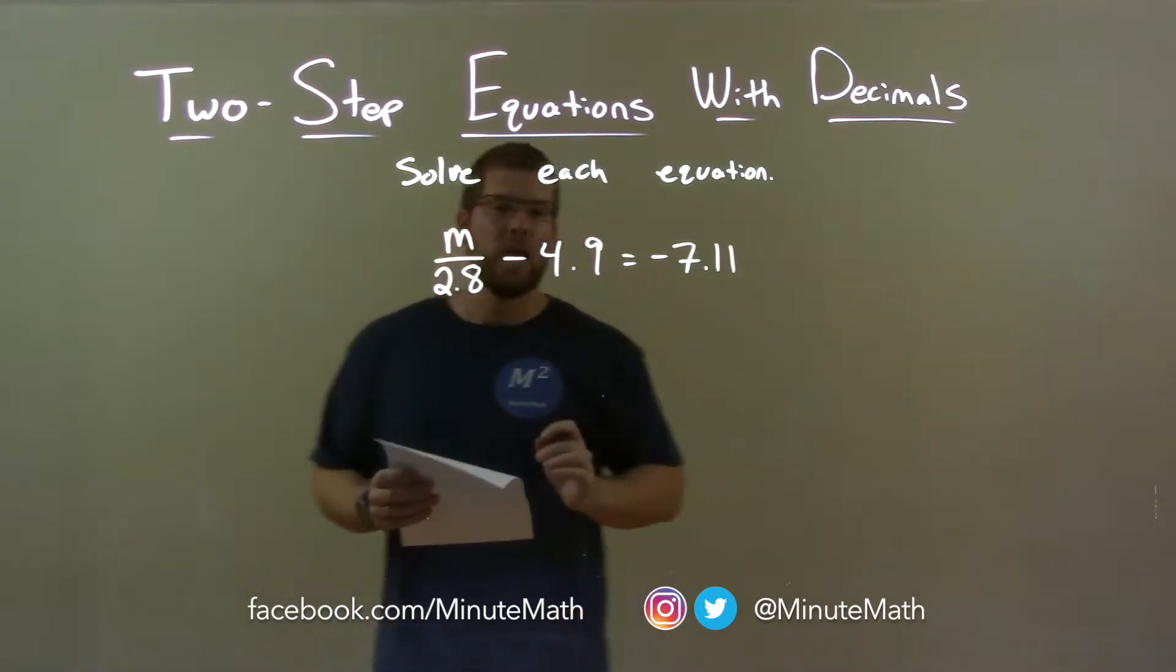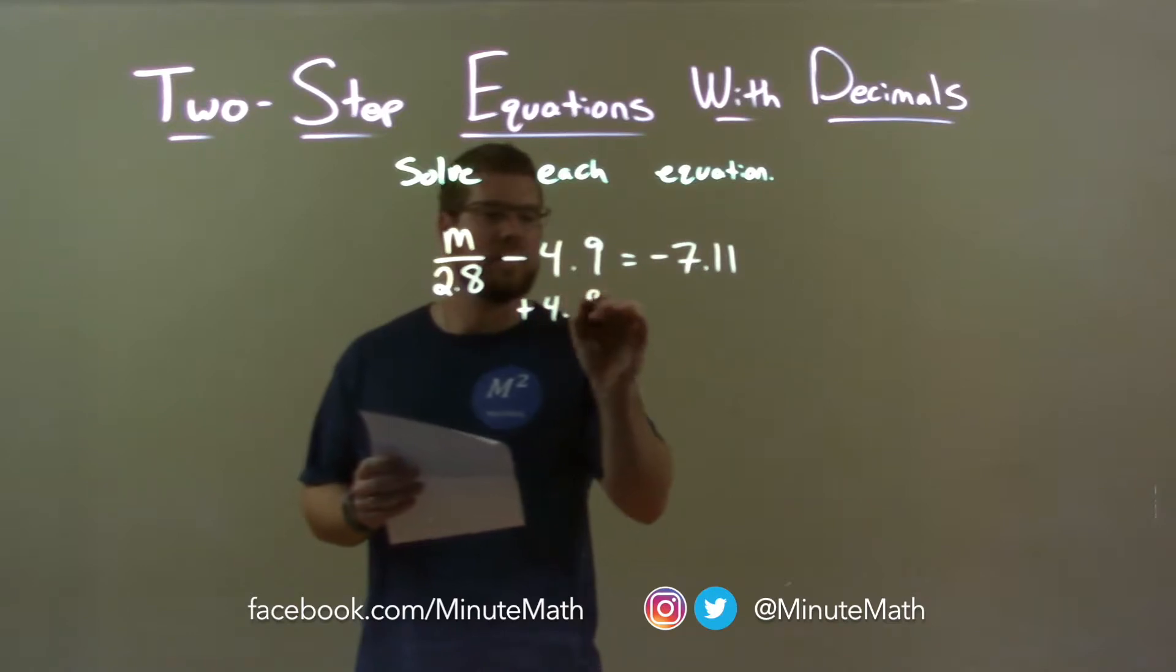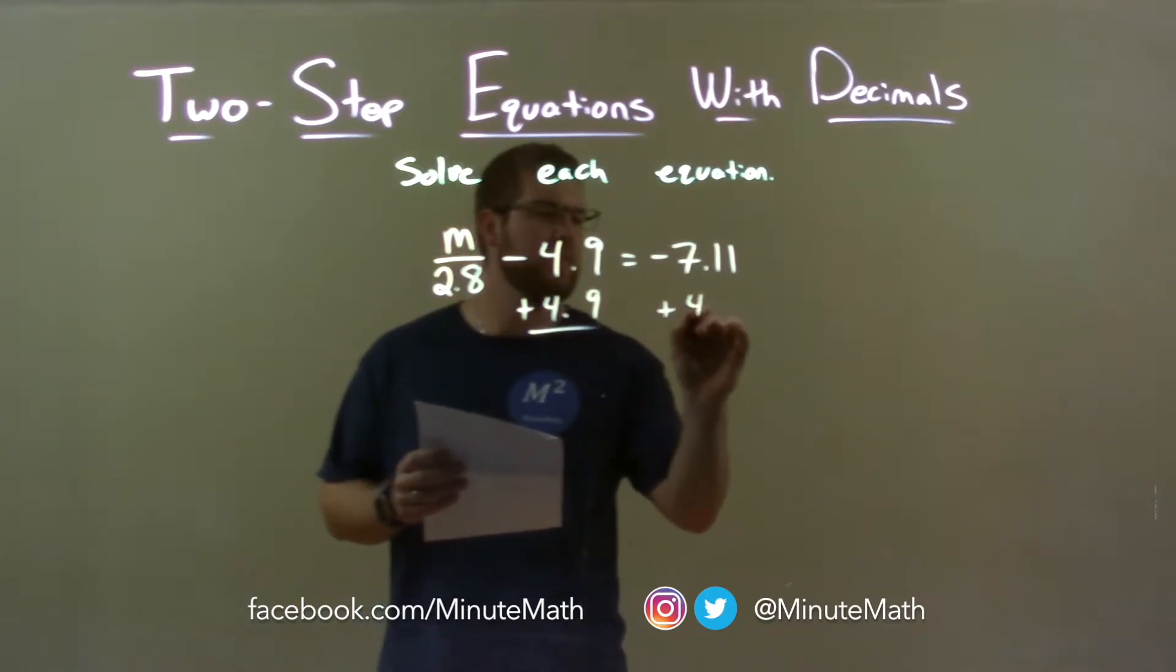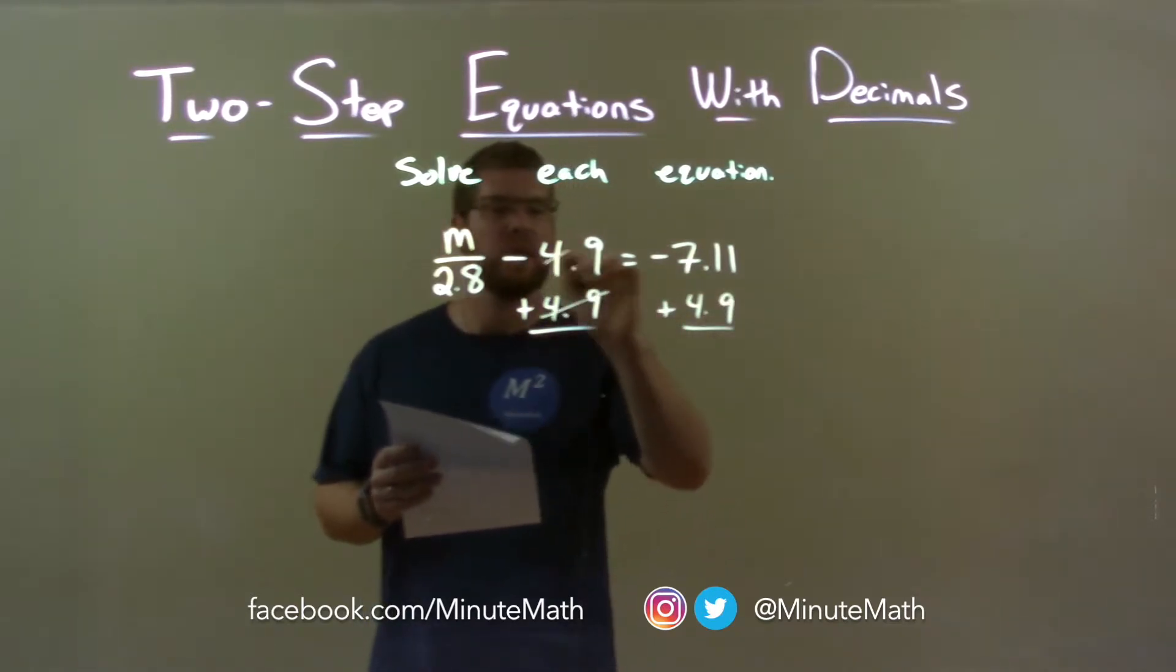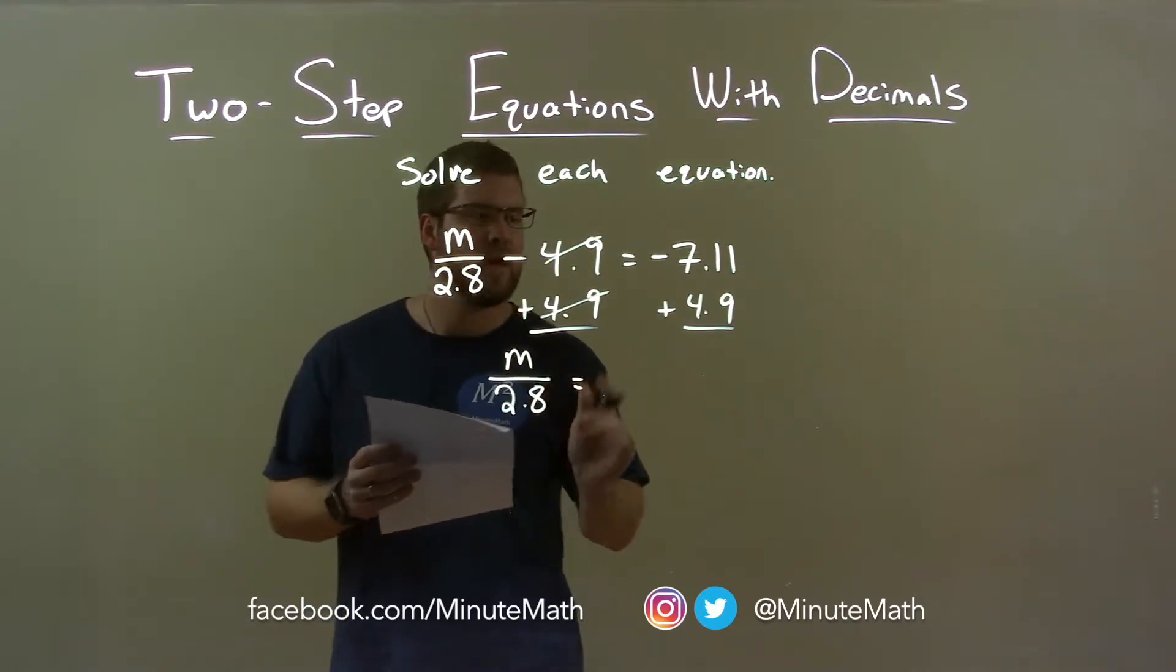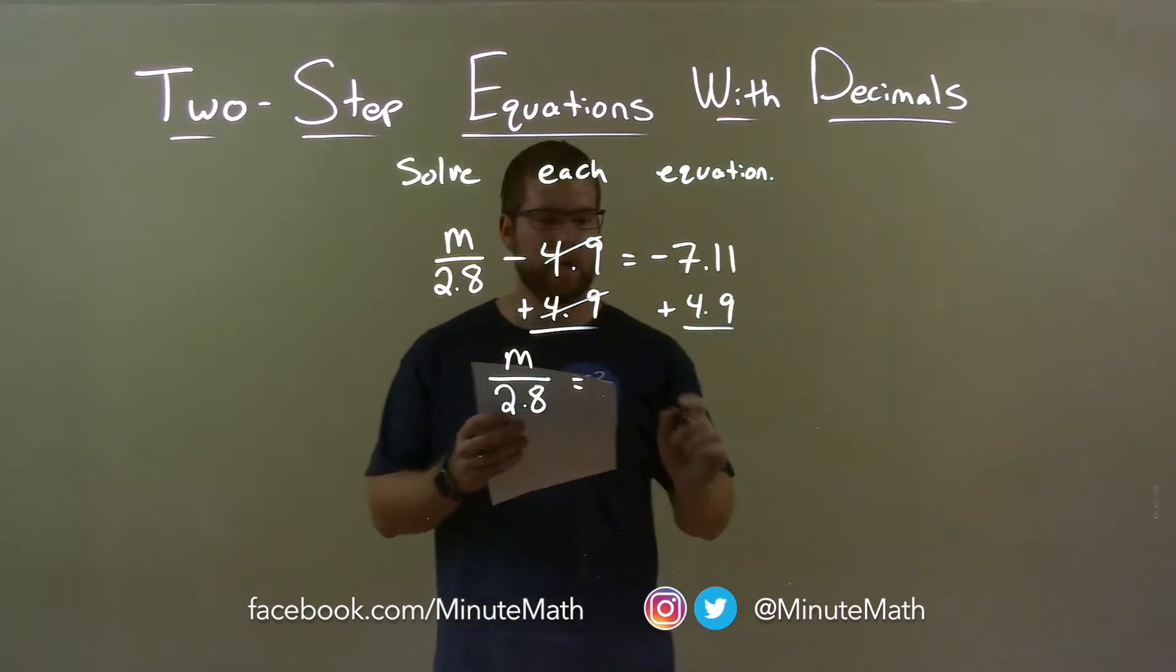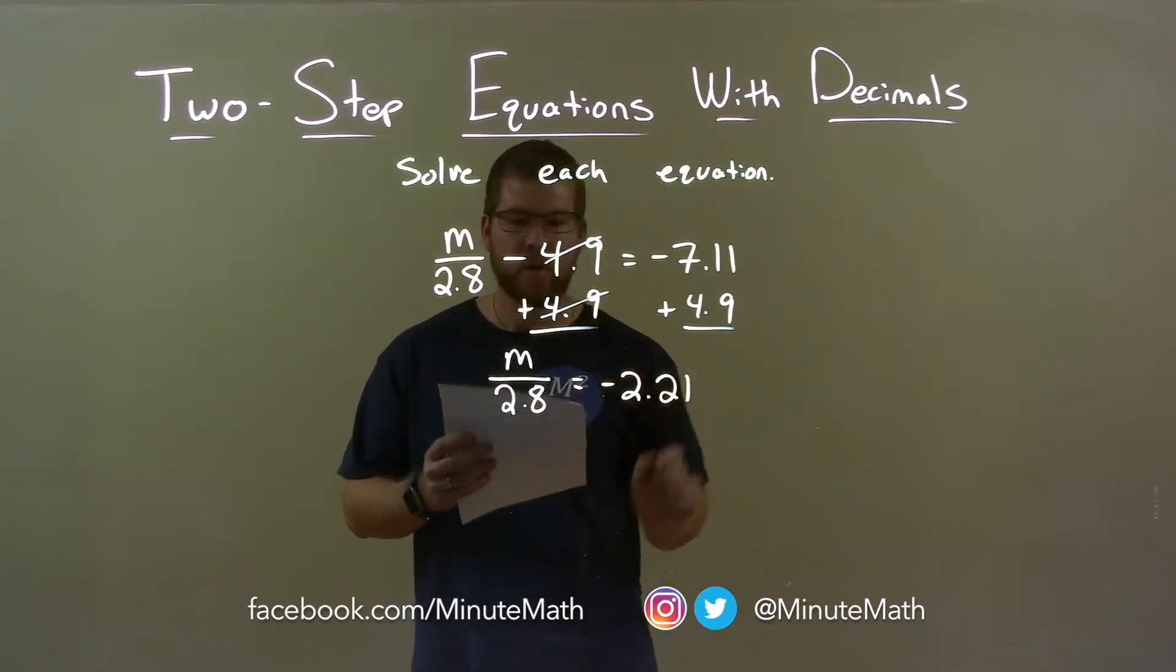Alright, first thing I want to do is I'm going to add 4.9 to both sides. This will eliminate the 4.9 on the left, giving me m over 2.8 by itself on the left, and on the right negative 7.11 plus 4.9 comes out to be negative 2.21.